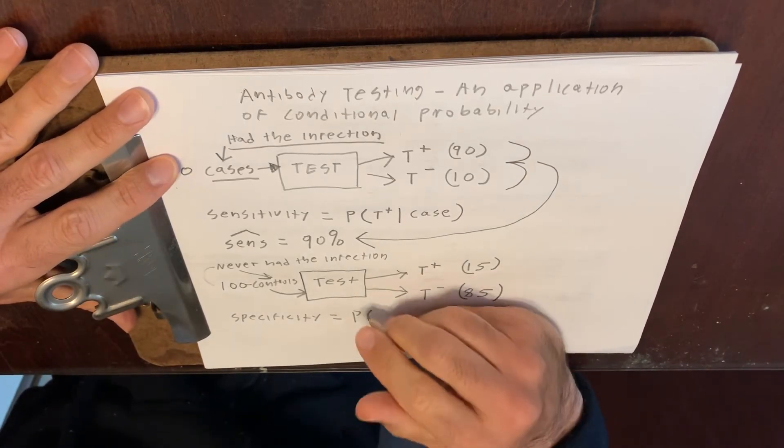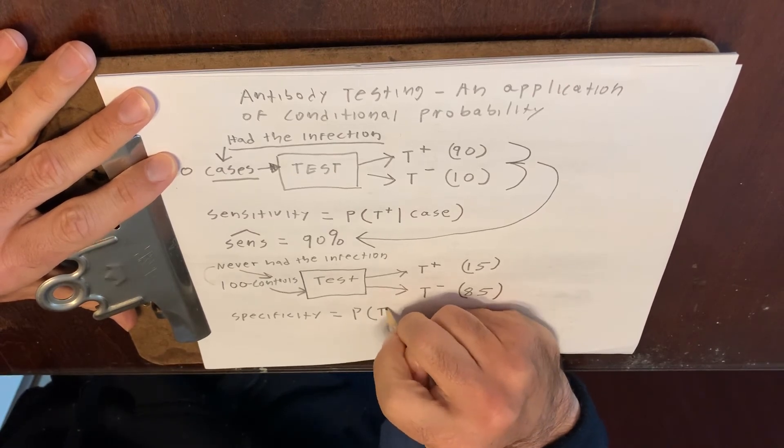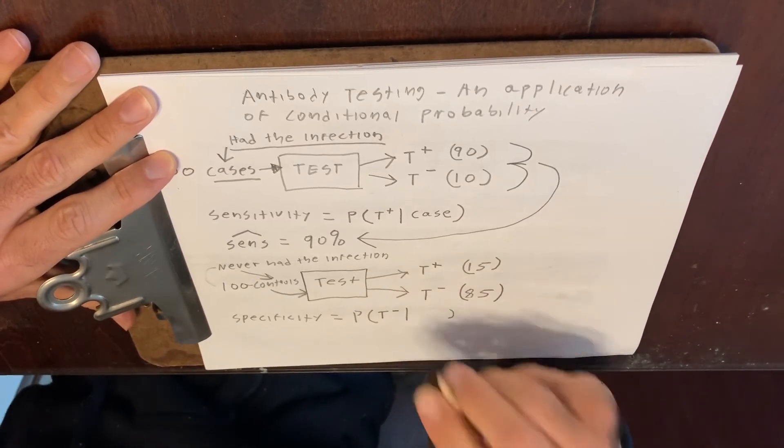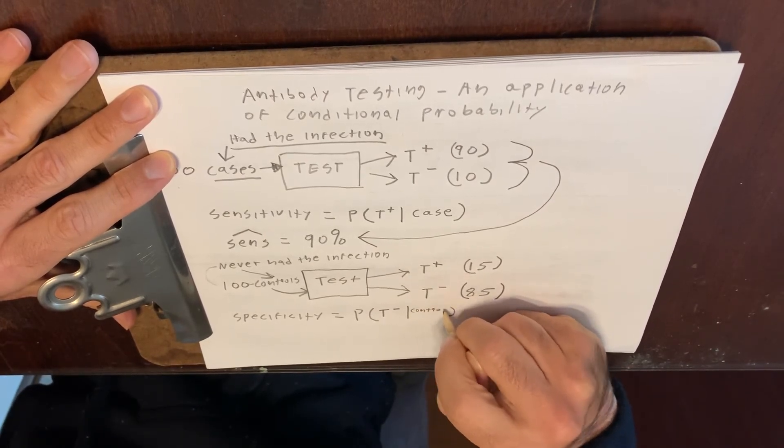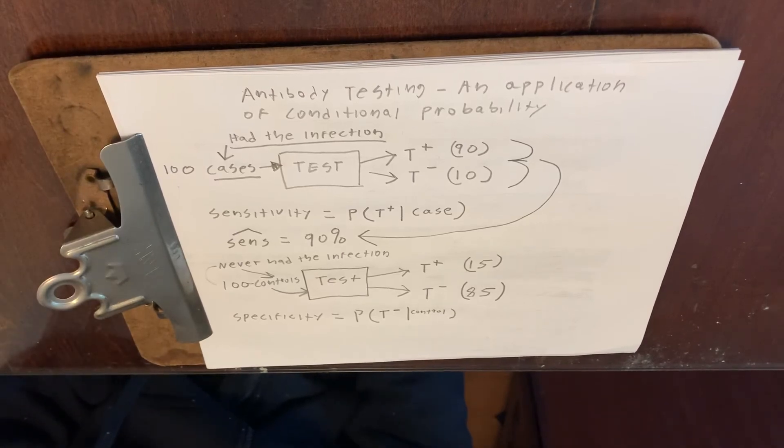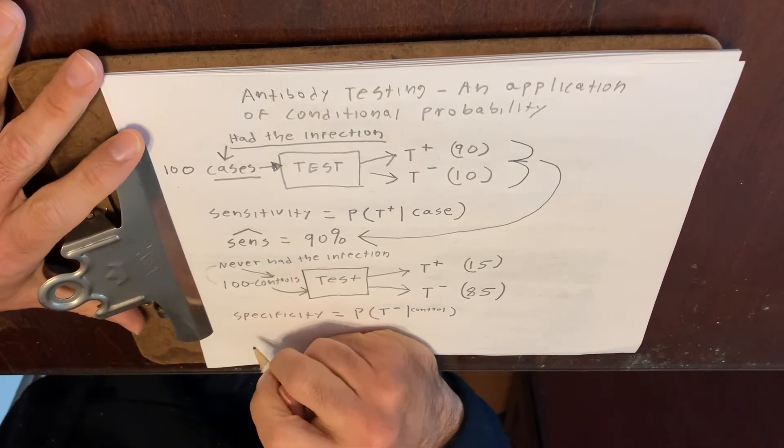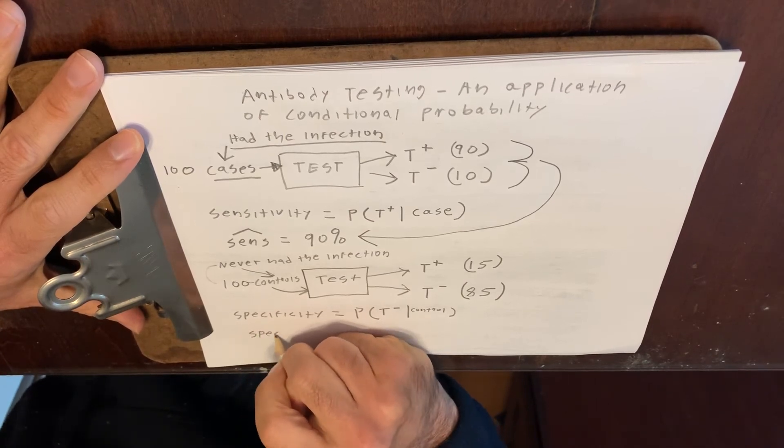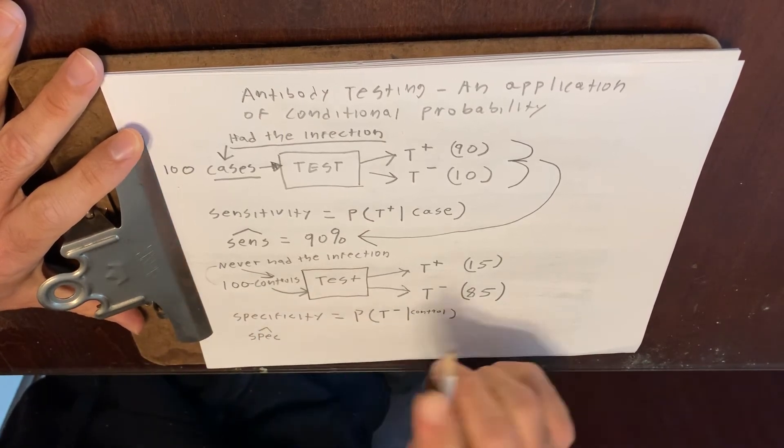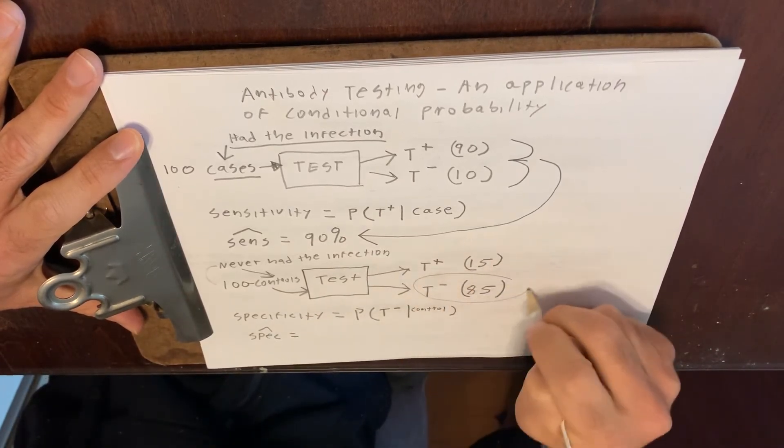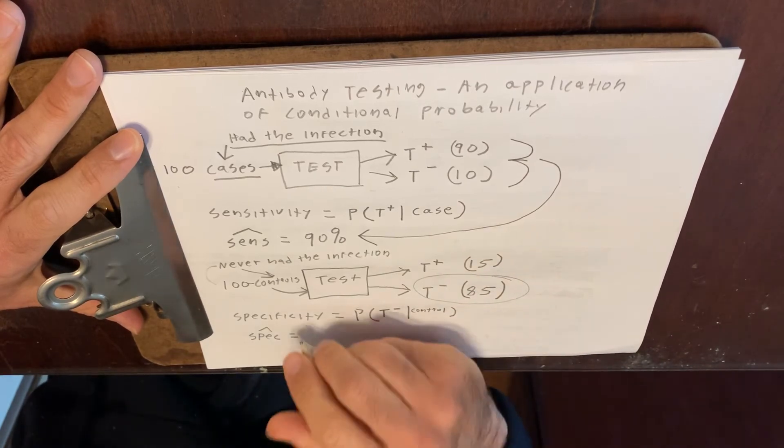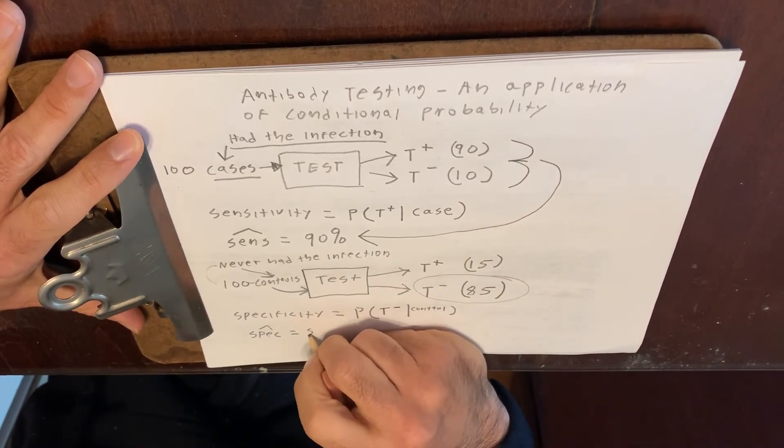The specificity is the probability of having a negative test result, given that the person is actually a control. In other words, if somebody never had the infection, what's the probability that the test result will actually be negative? And so statisticians would probably want you to put a little hat above this if you're using actual data. And in this case, in this hypothetical example, since 85 out of 100 did test negative, this would be 85%.